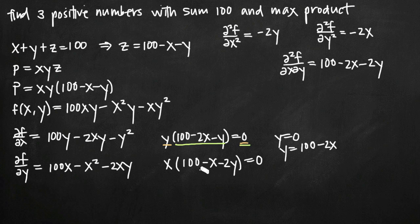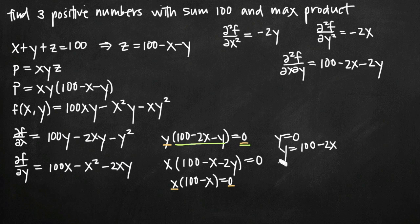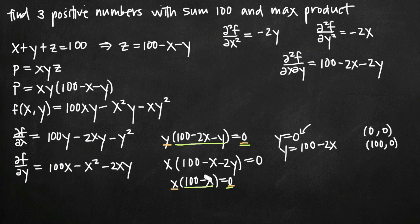We plug those values of y into our second equation to find corresponding values of x. Plugging in y equals 0, the negative 2y term goes away, leaving x times (100 minus x) equals 0. So either x equals 0, giving the critical point (0, 0), or 100 minus x equals 0, giving x equals 100 and the critical point (100, 0) — since we got there by plugging in y equals 0.